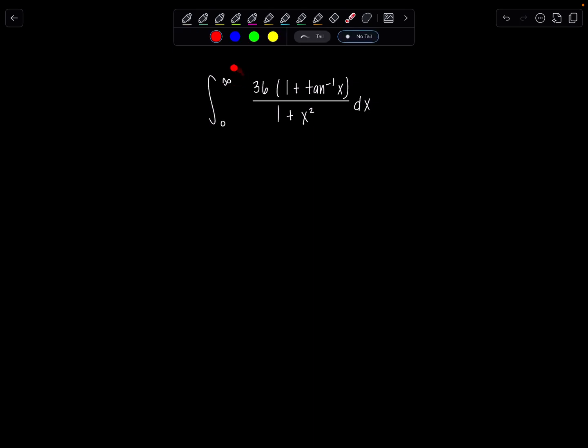First thing we need to do with this improper integral, replace this upper limit with some dummy variable. Let's just stick with t. Usually we replace infinities with t's, and then if there's a constant that makes the integral improper, we'll replace it with a or something like that. So let's rewrite this as limit t goes to infinity integral 0 to t, 36 times 1 plus tan inverse of x over 1 plus x squared dx.